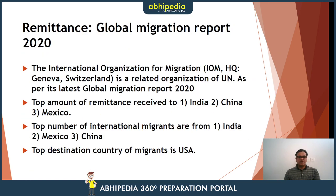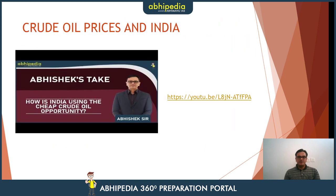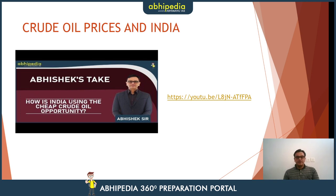We have discussed balance of payments in the static portion, but in 2019 the questions are dynamic and both current affairs and static areas are important. We have talked about the World Bank's remittance report and global migration report, and then we said that India has two major concerns: energy and gold. We also covered crude oil prices and how India is managing them. The link is already given in the description, so let's start today's lecture.